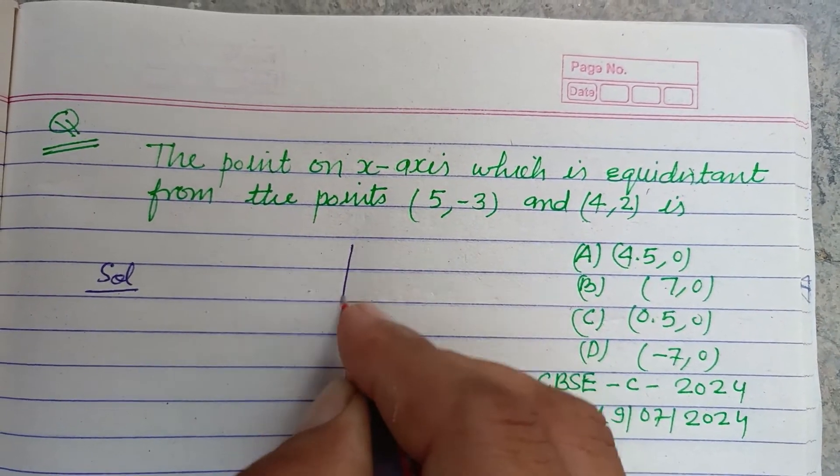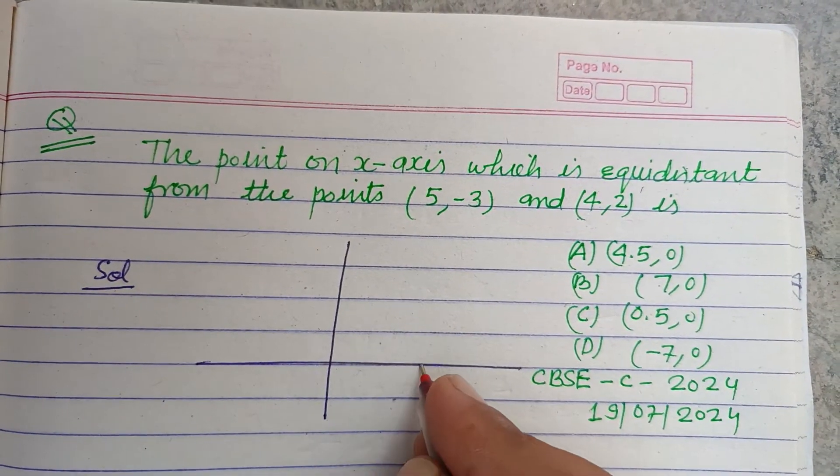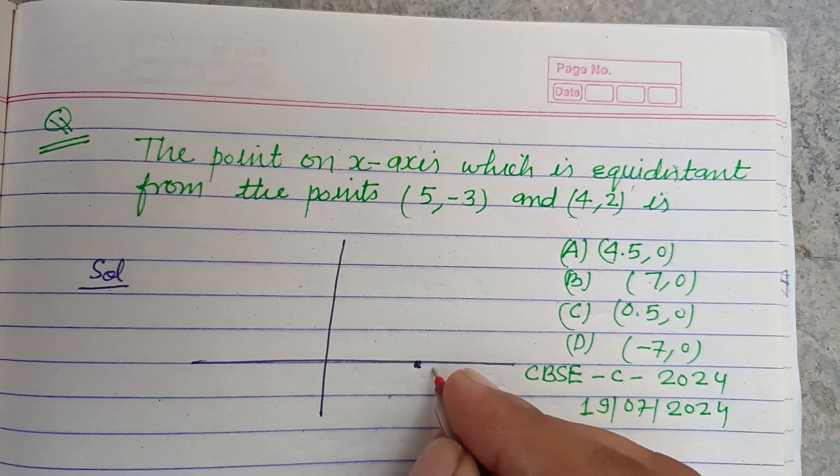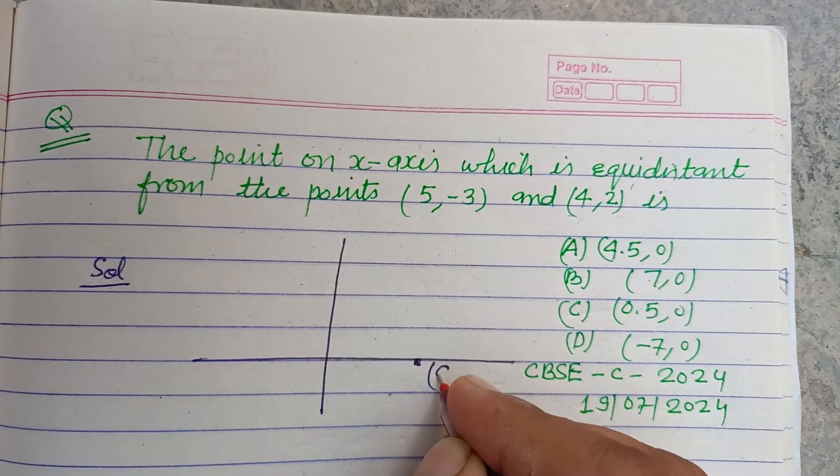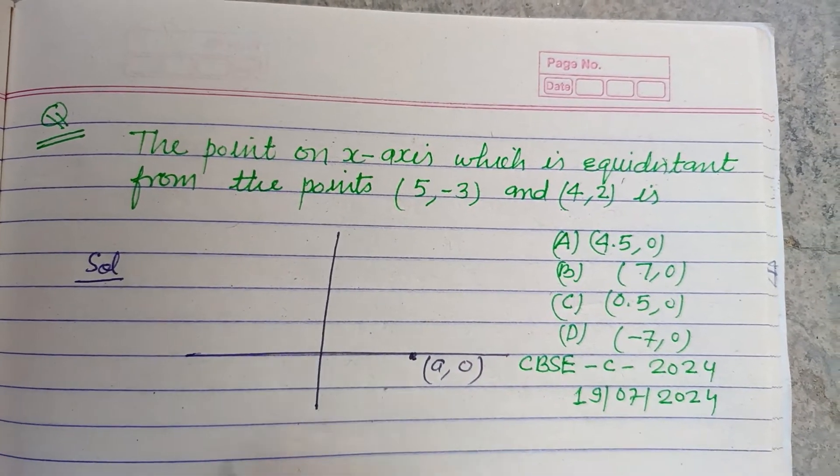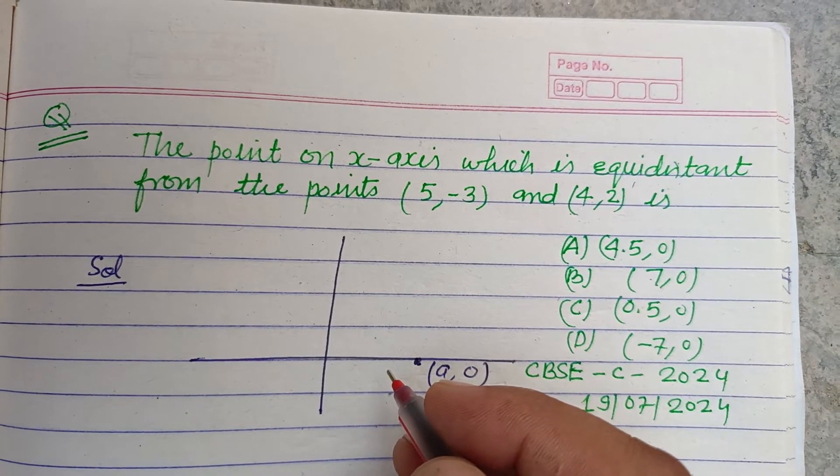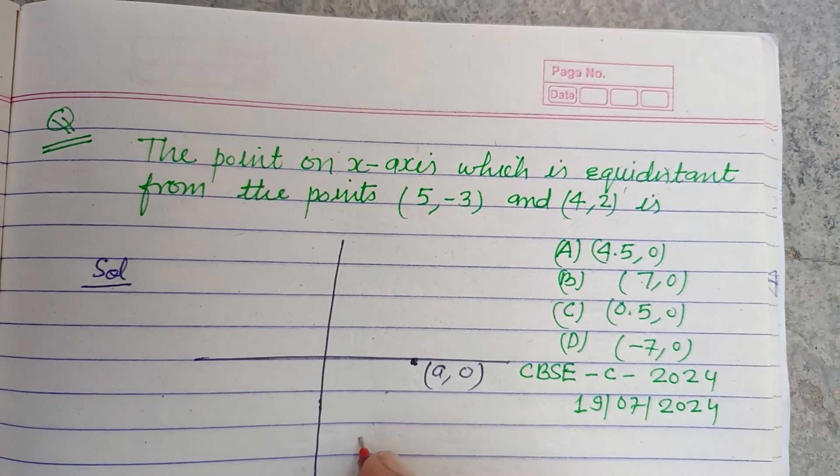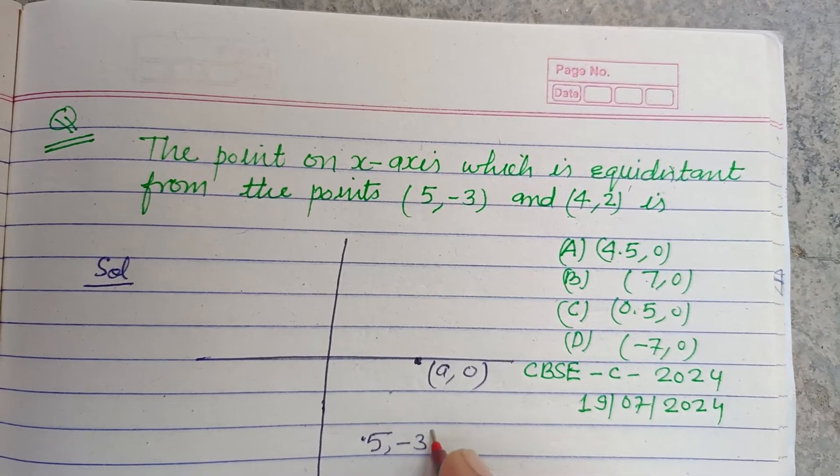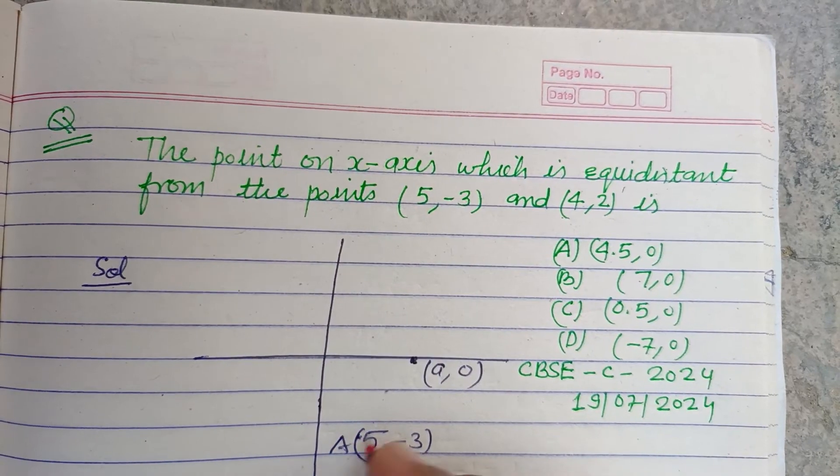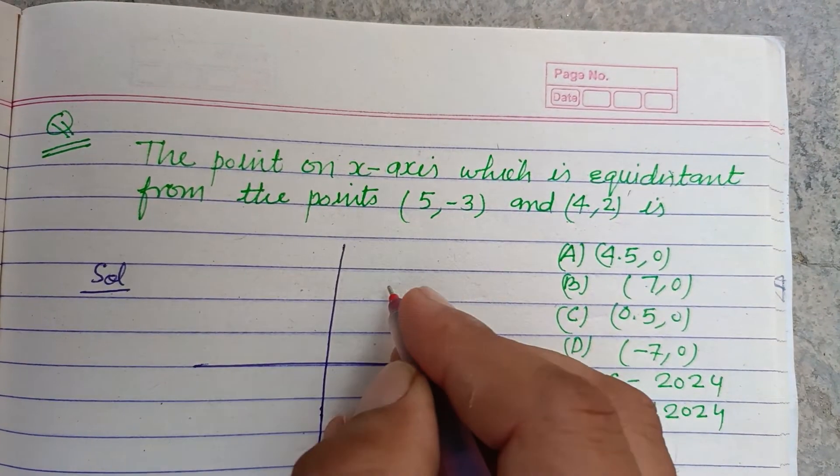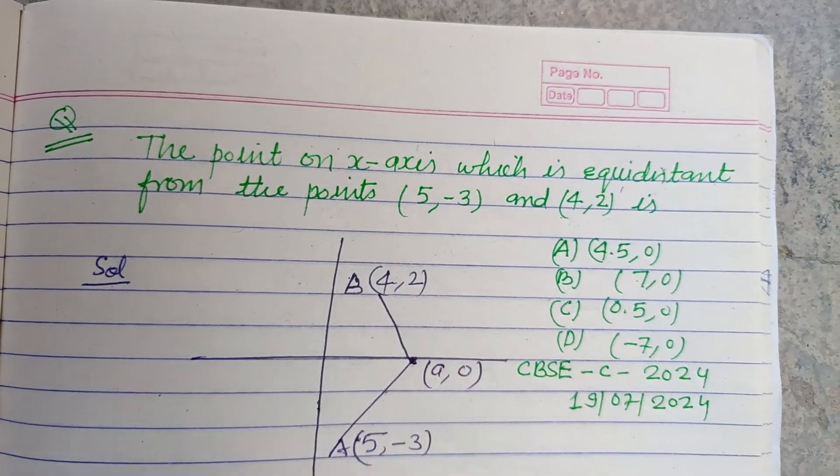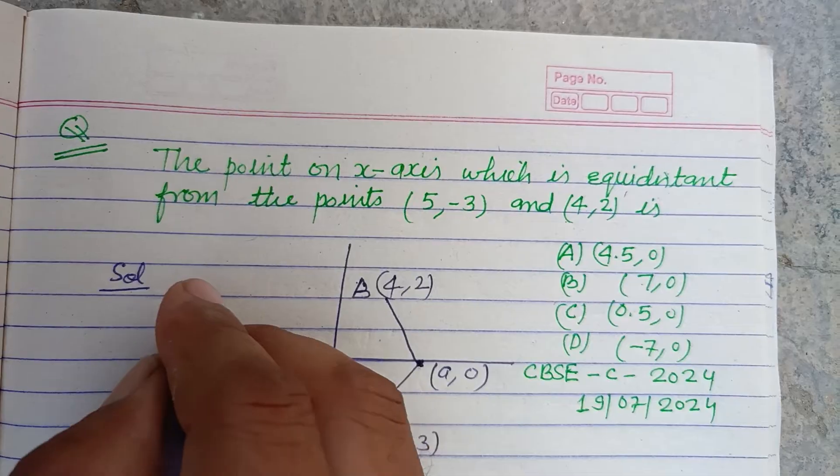So here the point is on the x-axis, where y is zero. Let this point be (a,0). It is equidistant from point (5,-3), which lies in the fourth quadrant—let this be point A—and from (4,2), which lies in the first quadrant—let this be point B.